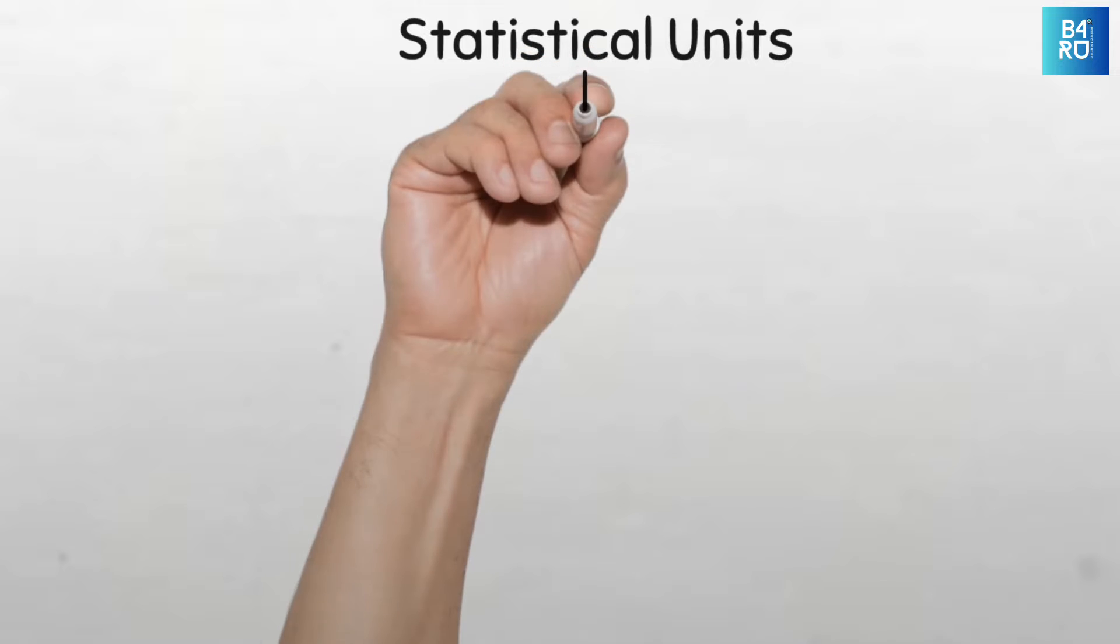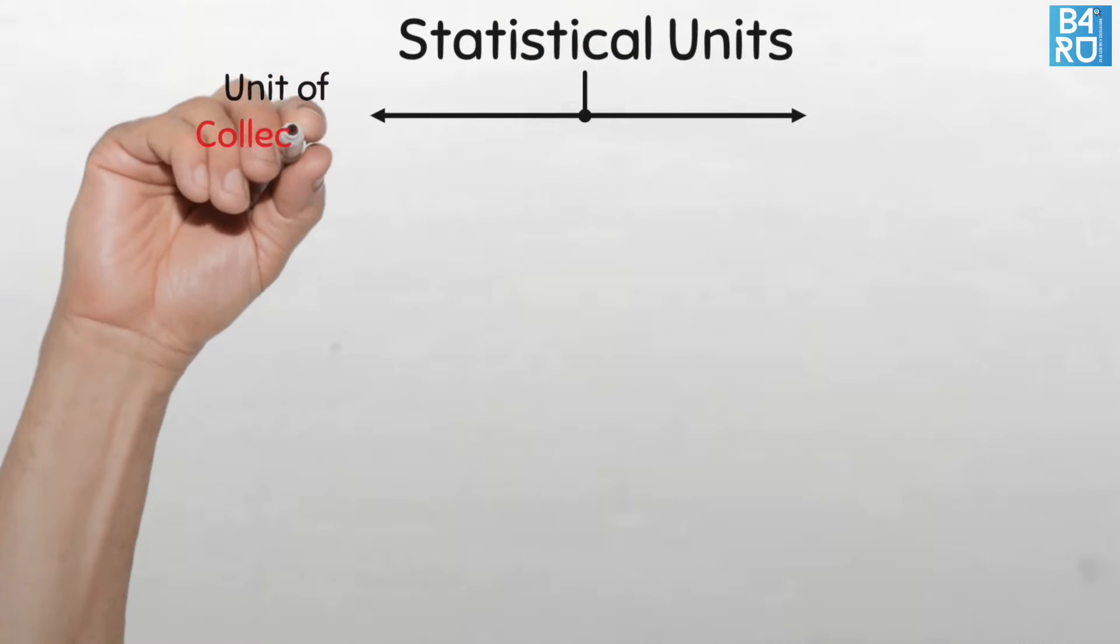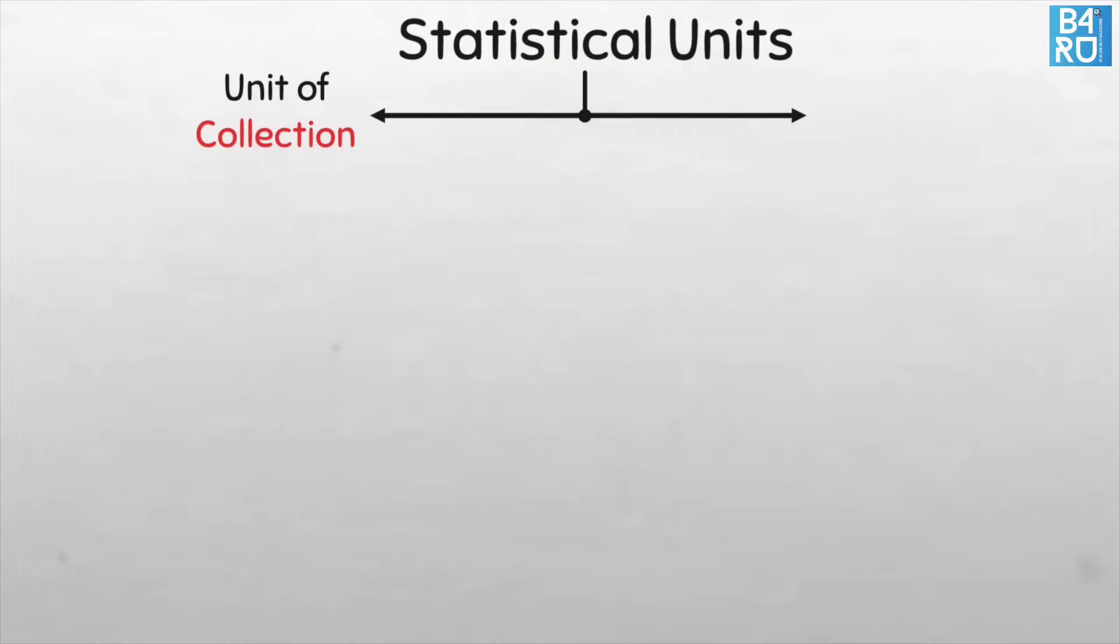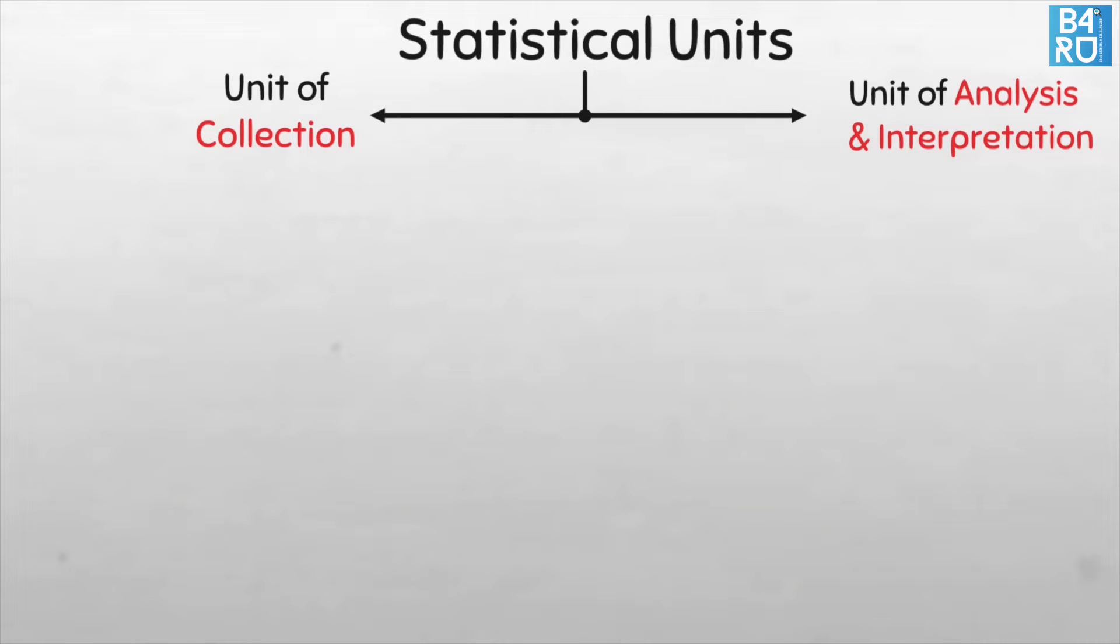Statistical units are broadly divided into two types depending on when it is used. We have the unit of collection, if it is used during data collection, as well as the unit of analysis and interpretation, used during data analysis.